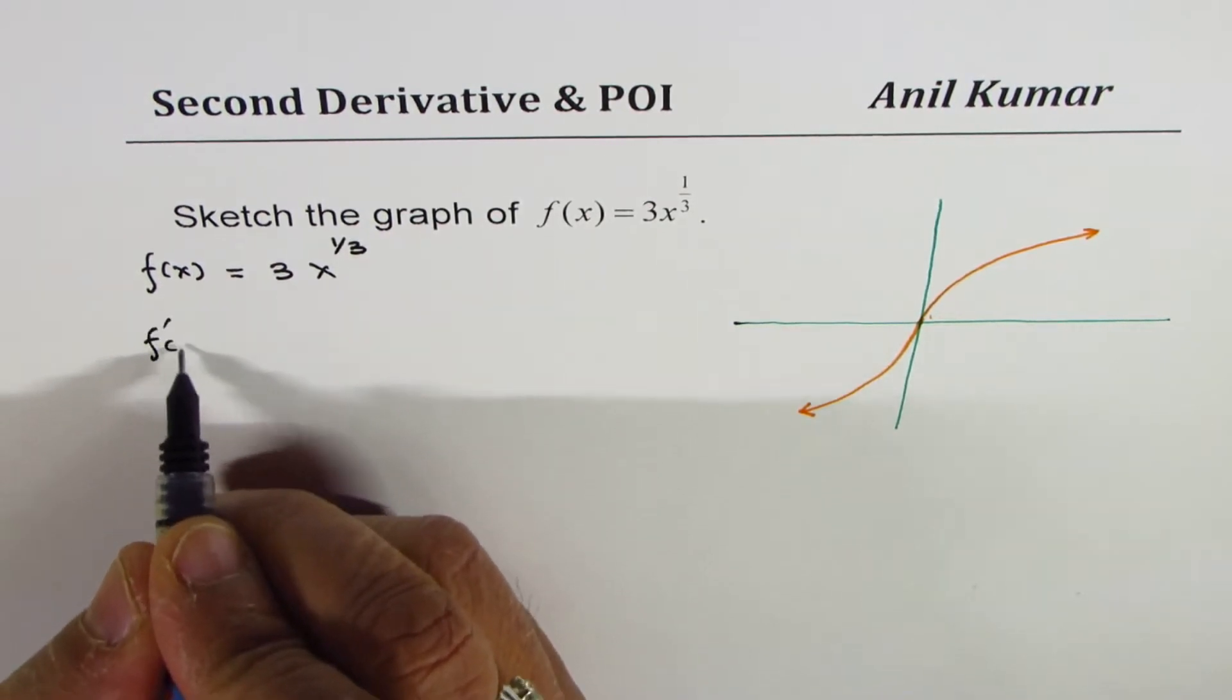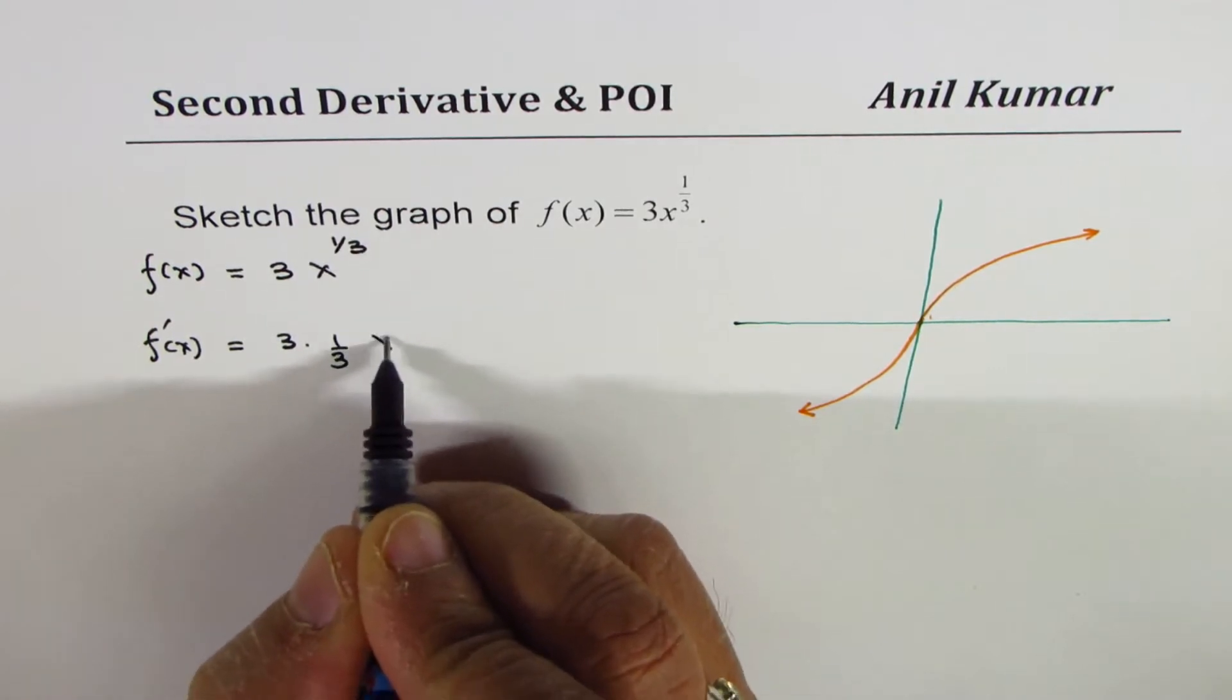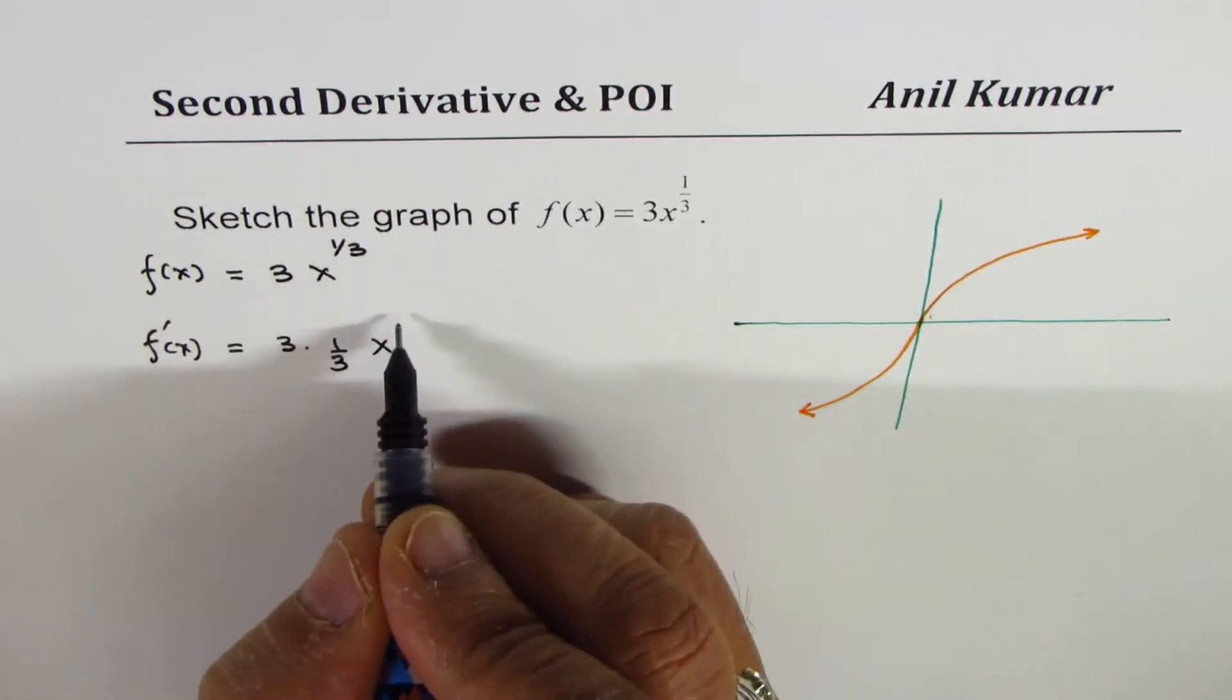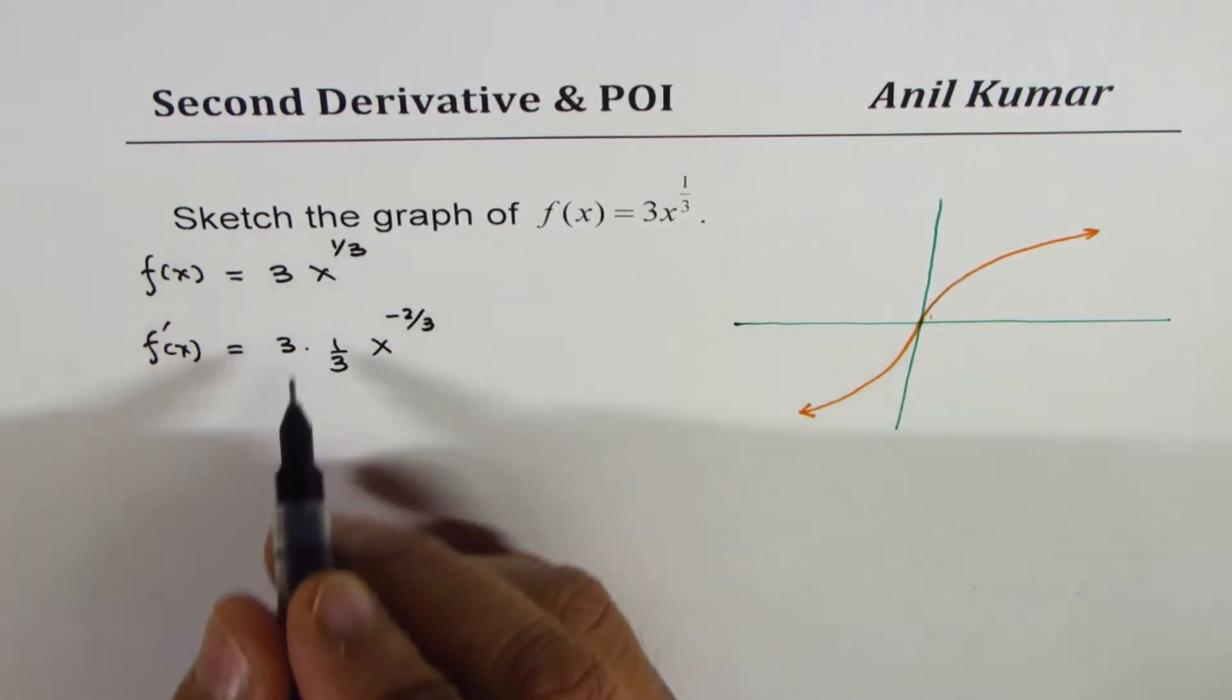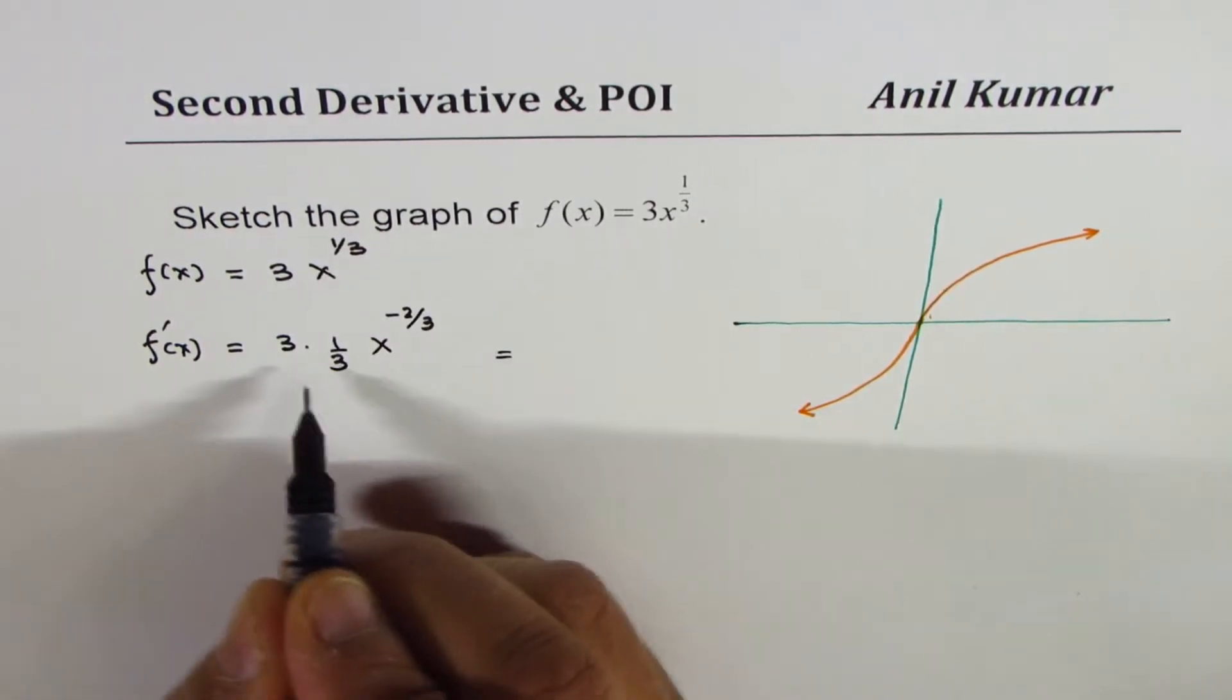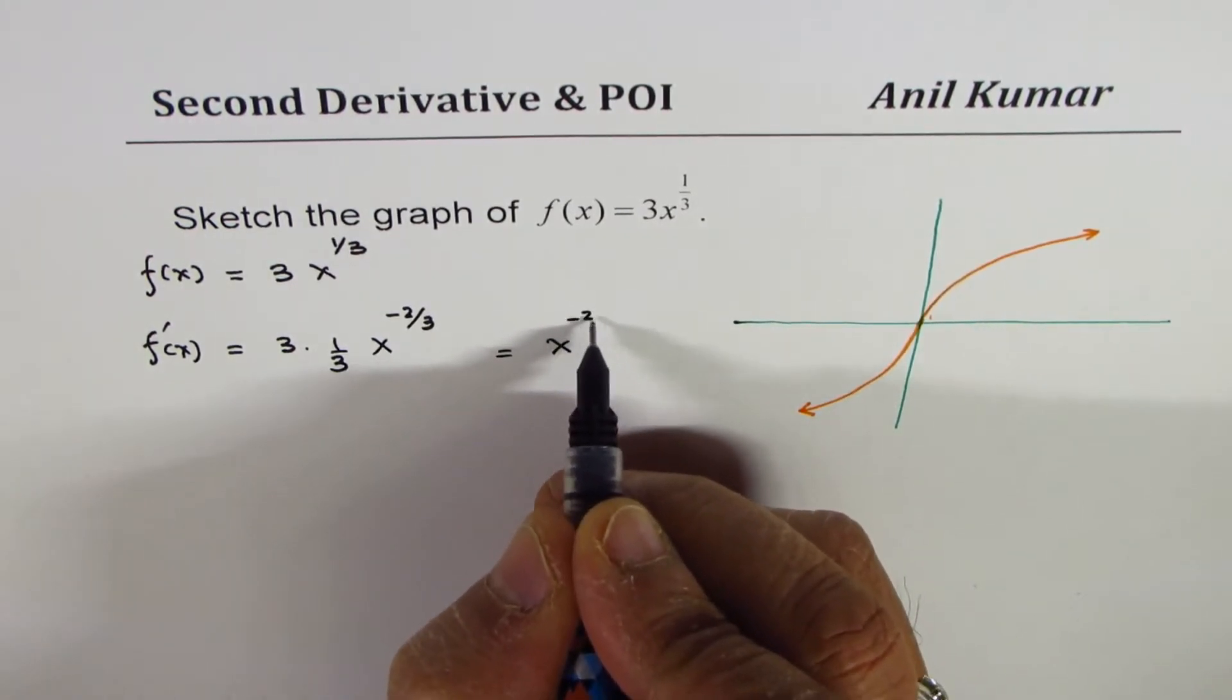Now, first derivative for this function is 3 times 1 over 3, x to the power of 1 over 3 minus 1. So it is minus 2 over 3. By now, you are expert in doing all this. So we have x to the power of minus 2 over 3.